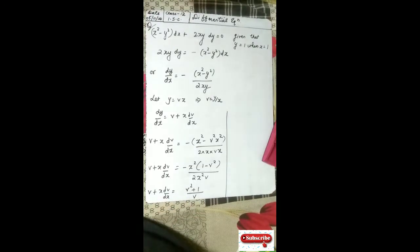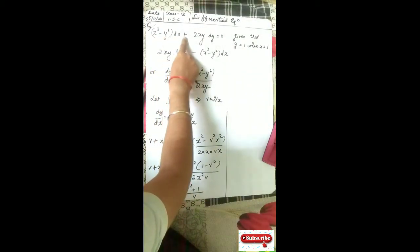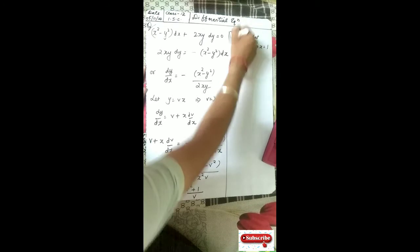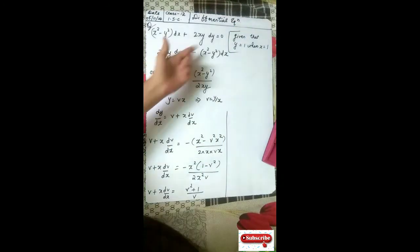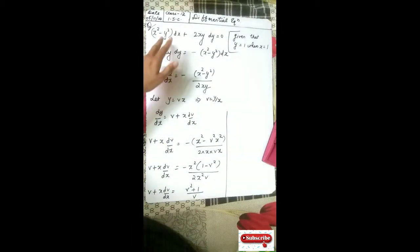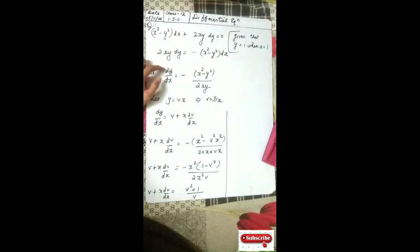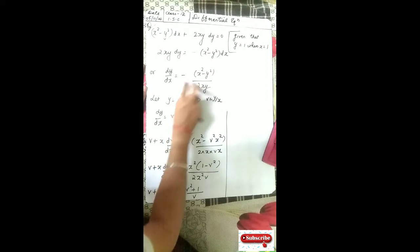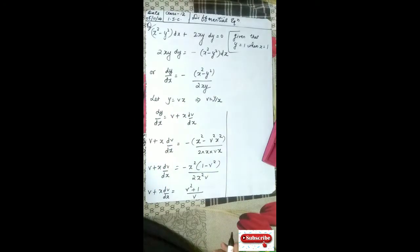Here is the question: x² minus y² dx plus 2xy dy equal to 0, given that y equal to 1 when x is equal to 1. This is not in the proper form, so let us arrange it and find dy/dx. Taking dx to the denominator and 2xy in the denominator, we get dy/dx equal to minus of (x² minus y²) upon 2xy.